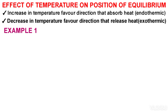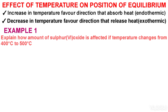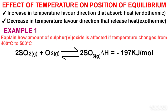Example 1: I explain how the amount of sulfur trioxide (SO₃) is affected if temperature changes from 400°C to 500°C in the equilibrium mixture below. The equation is: 2SO₂ + O₂ ⇌ 2SO₃, with an enthalpy change of −197 kJ/mol.